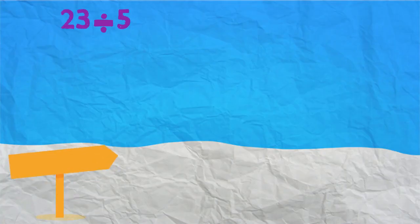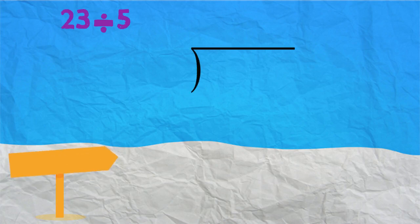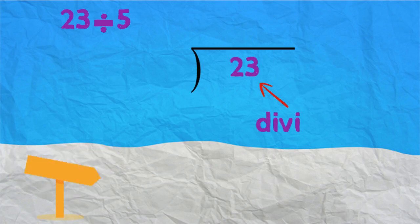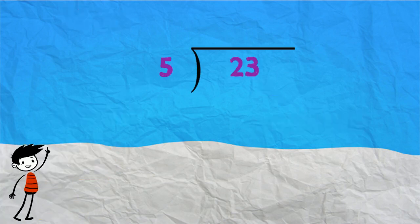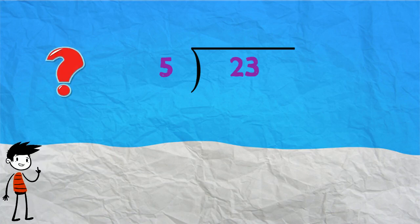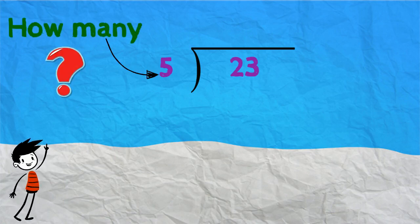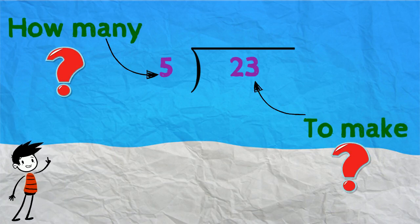Now let's try this division problem: 23 divided by 5. We are going to write it in a different symbol — 23, which is the dividend, and 5, which is the divisor. To solve this problem, we need to see how many 5s we need to make 23, or almost 23.